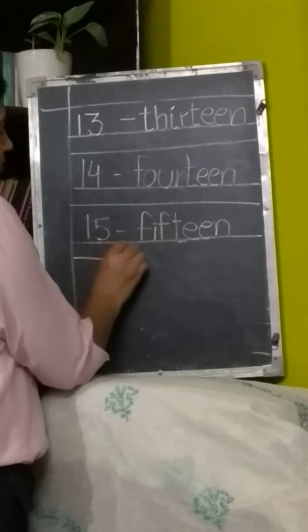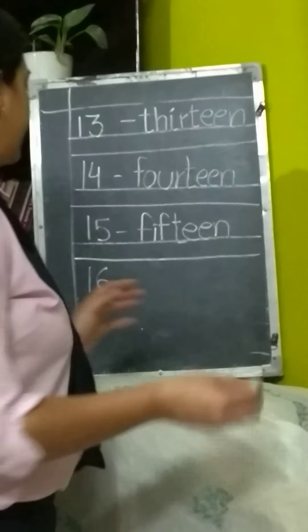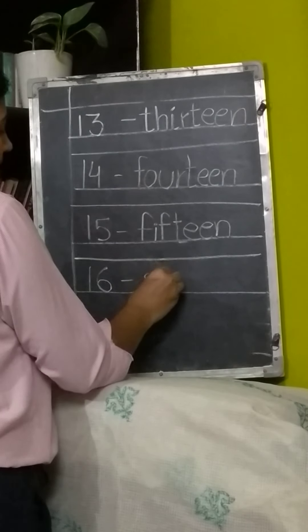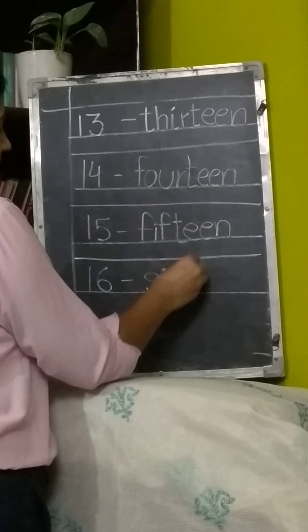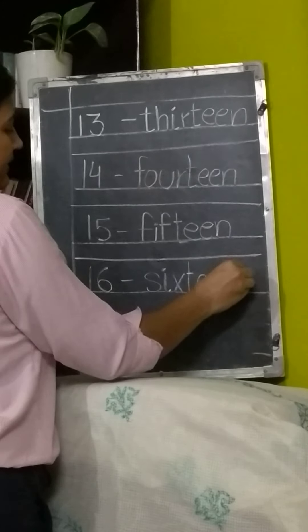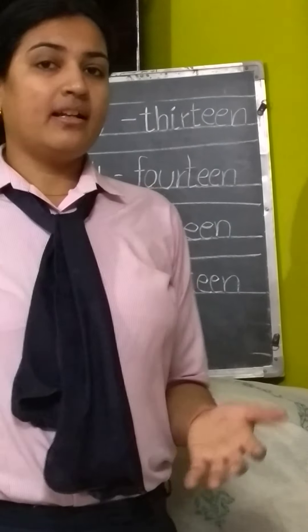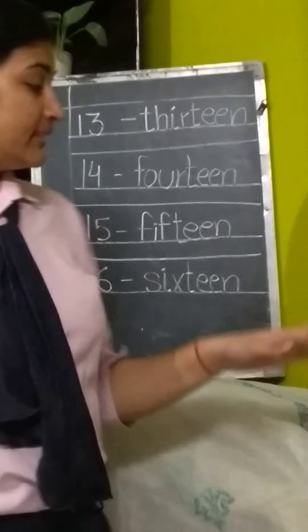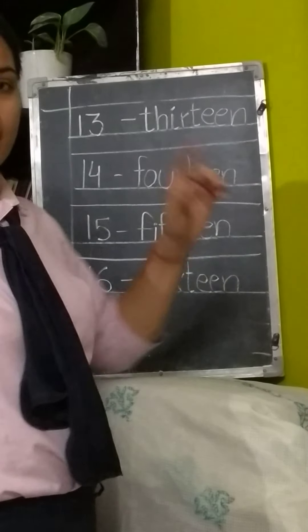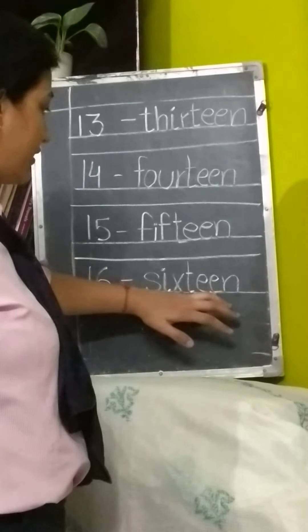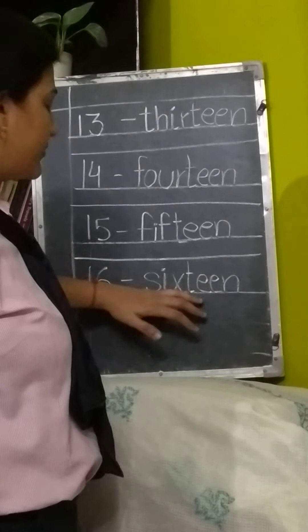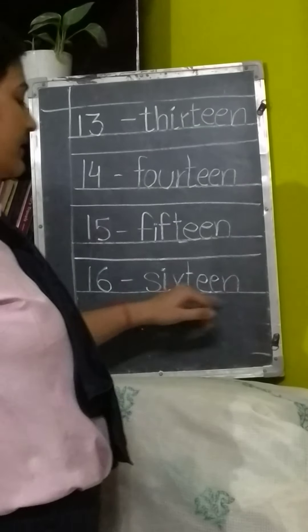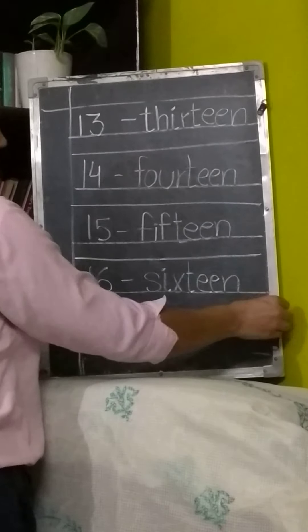Next number is 16. 16 is again very simple. You need to write 6, then teen. 16: S-I-X-T-E-E-N. Write S, I, X for 6, then T-E-E-N for teen. Are you maintaining the level? You just stop where your line is — touch the line and stop. 16.